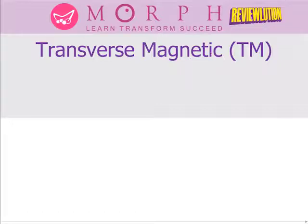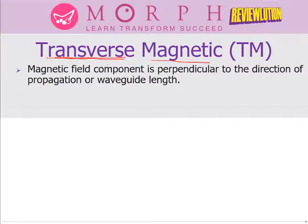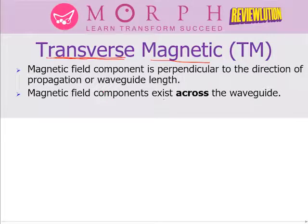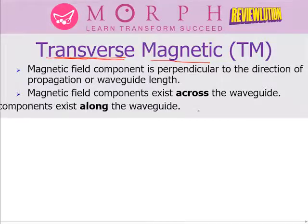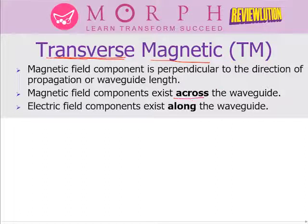In transverse magnetic (TM) mode, the magnetic field component is perpendicular to the direction of propagation — perpendicular to the waveguide length. So the magnetic field exists across the waveguide and not along it. Because the electric field is perpendicular to the magnetic field, the electric field exists along the waveguide. Magnetic field exists across and electric field exists along.